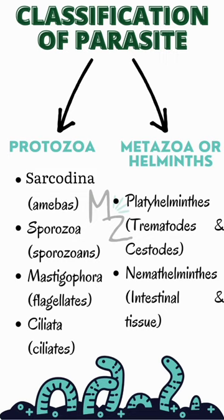Platyhelminthes are further classified into Trematodes — for example, Schistosoma — and Cestodes, which are also called Tapeworms, for example, Taenia solium. Trematodes are also called Flukes.